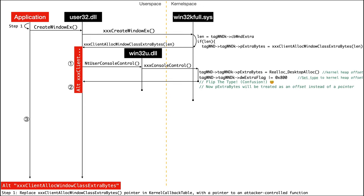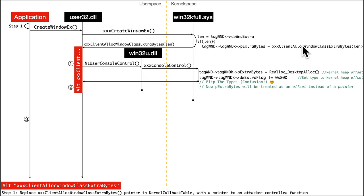That is the core crux of the confusion. When it called into xxxCreateWindow and then called back to user space, it's expecting that the user space allocator is going to allocate some user space heap data and pass back a pointer. This code is written in the context of user space pointers, yet the attacker by hijacking this function caused some other function to be called, which causes a flip of the type — setting this bit field.